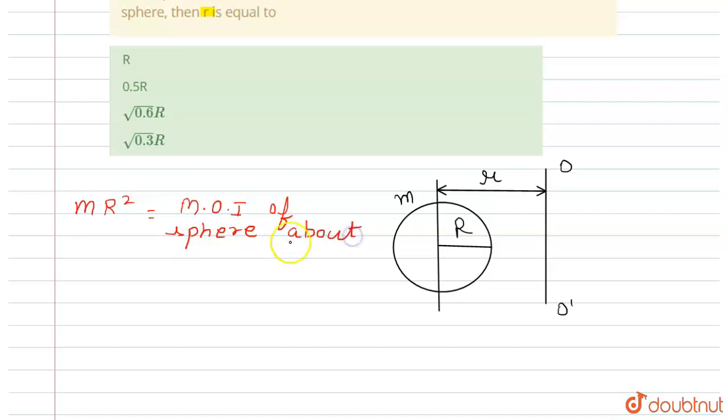Now we can find the value of I O O dash is equal to two by five m r square.